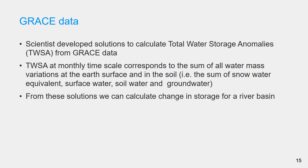Scientists develop solutions to calculate total water storage anomalies from GRACE data. GRACE solutions provided as total water storage anomalies at monthly time scale correspond to the sum of all water mass variations at the surface and in the soil. That means it includes the sum of snow water equivalent, surface water, soil water, and groundwater.